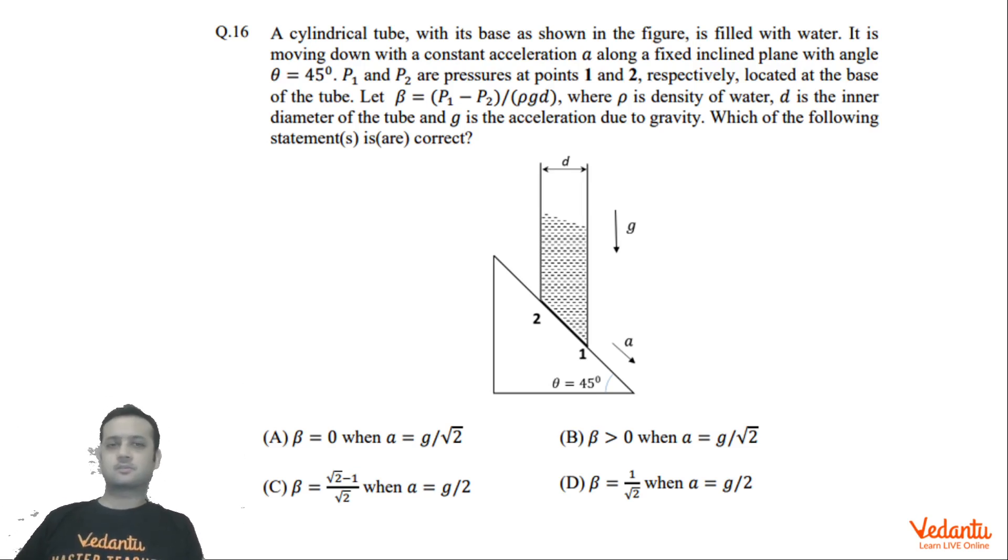I will tell you one very good crisp short solution of this question. So what's happening over here there's a fixed inclined plane and on this inclined plane there's a cylinder whose bottom surface is according to that of inclined plane itself. So this cylinder is sliding with an acceleration value of A. So we choose two points P1 which is right at the bottom and P2 which is here. This pressure difference divided by rho G D has been defined beta. So beta is P1 minus P2 divided by rho G D. D is the diameter of the cylindrical tube, rho is the density and G is the acceleration due to gravity. Beta is 45 inclination angle. We have to find the value of beta when acceleration is G by root 2 and when acceleration is G by 2.